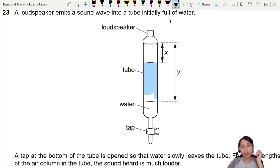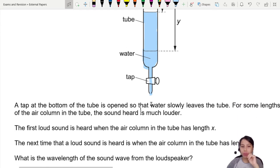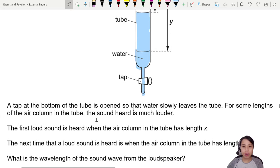There's more water down here. The tap here you open so that water slowly leaves the tube. For some length of the air column, the sound heard is much louder. Why do we say much louder? Whenever you see this word much louder, it means that a stationary wave, or some people call it standing wave, has formed.